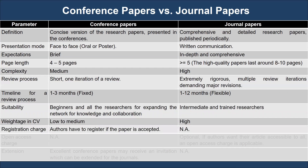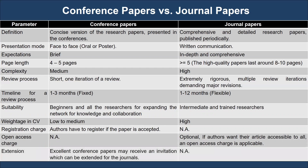Authors have to register if the paper is accepted to participate in conferences, whereas there is no registration fee for publishing in journals. However, if authors want their article accessible to all, an open access charge is applicable. Excellent conference papers may receive an invitation to be extended for journals; however, the extended work of the presented conference paper is subjected to the further review process of the respective journal.